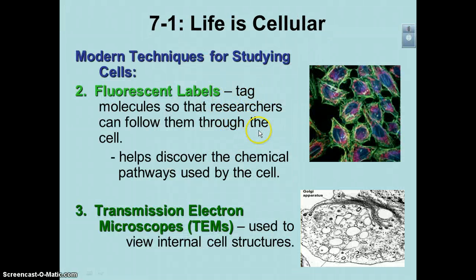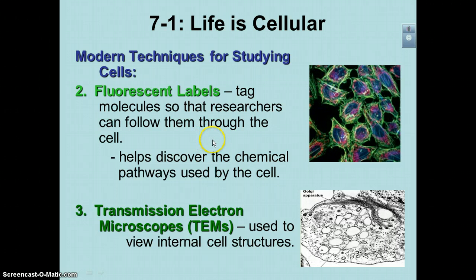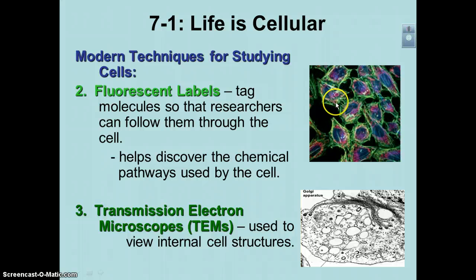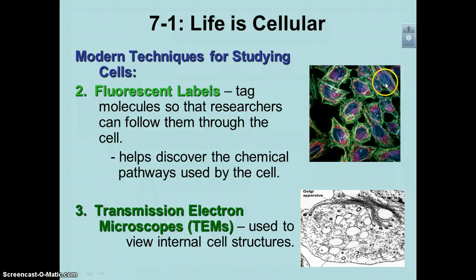Some other things we can use to study cells — one of the most common in modern biology is the fluorescent label. Fluorescent just means you have colors that glow. What you do with these labels is tag the molecules — a protein, a lipid, a carbohydrate, or whatever — found in a certain type of organelle, or you want to track that protein as it goes through a cellular pathway. As you can see in these pictures, the bright green things are the microtubules and microfilaments of the cytoskeleton. They've tagged this protein to be bright green, which makes it very easy to see.